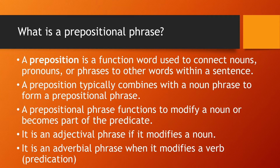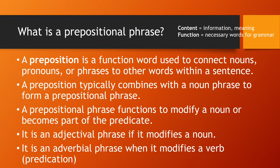A prepositional phrase functions to modify a noun or becomes a part of the predicate. It is an adjectival phrase if it modifies a noun. It is an adverbial phrase when it modifies a verb, which is called predication. A content word gives information and holds meaning, whereas a function word is a necessary word for grammar — it is needed to complete the sentence and make complete sense, but in itself it doesn't hold content or information.